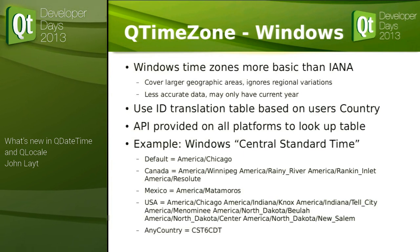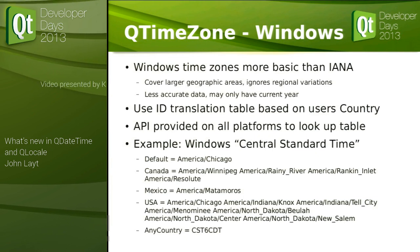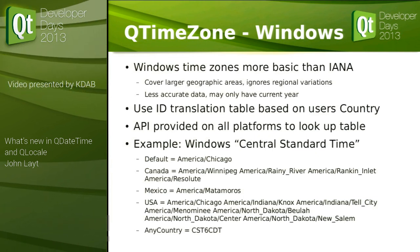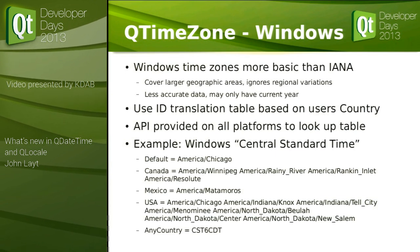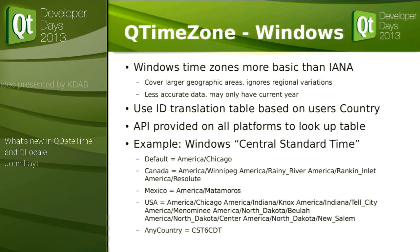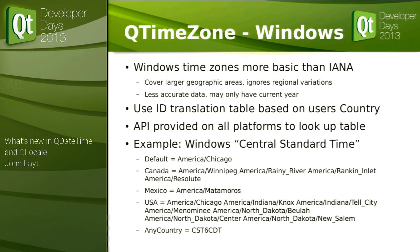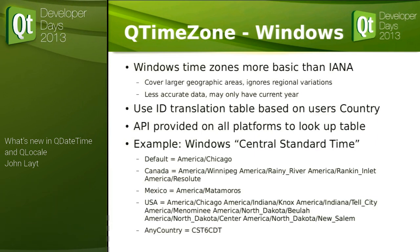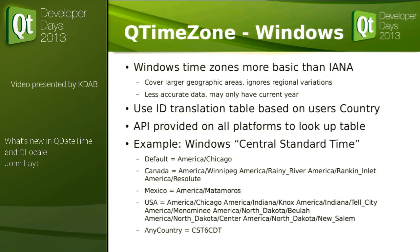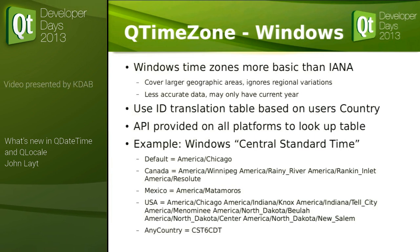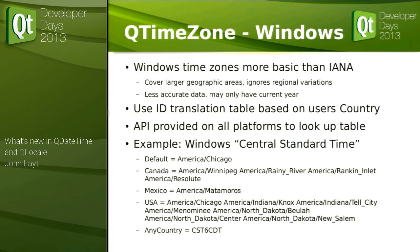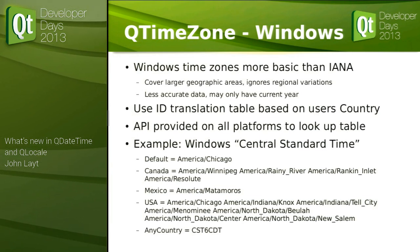On Windows there are some serious restrictions — they have really bad time zone support, although it looks like in Windows 8.1 they're finally joining the modern era. We use an internal translation table to convert from Windows time zones to IANA codes. We pick up the user's country and time zone, use the default zone for that, and going back the other way we do the translation — that's part of the Unicode CLDR standard, which we update every release.